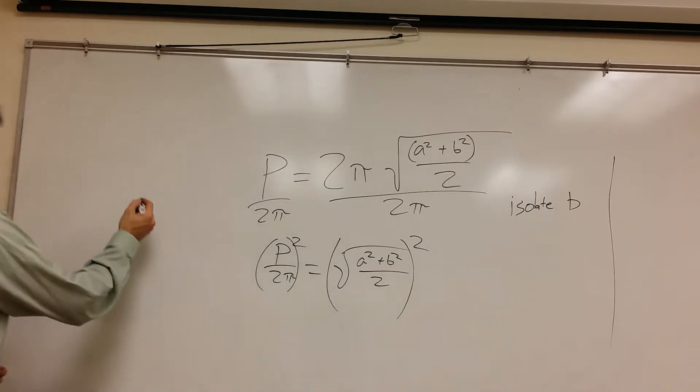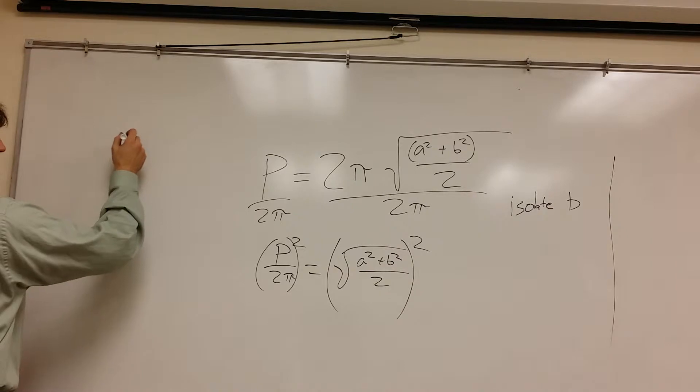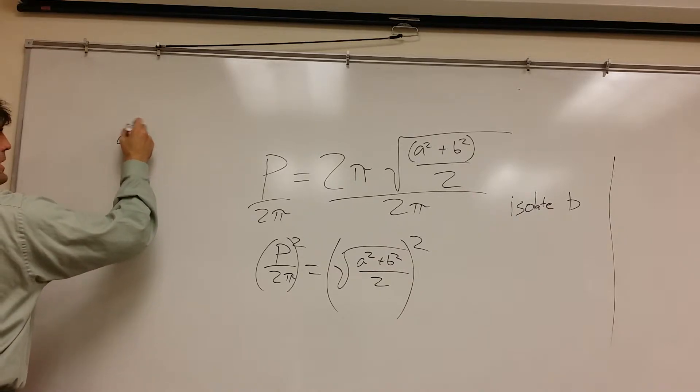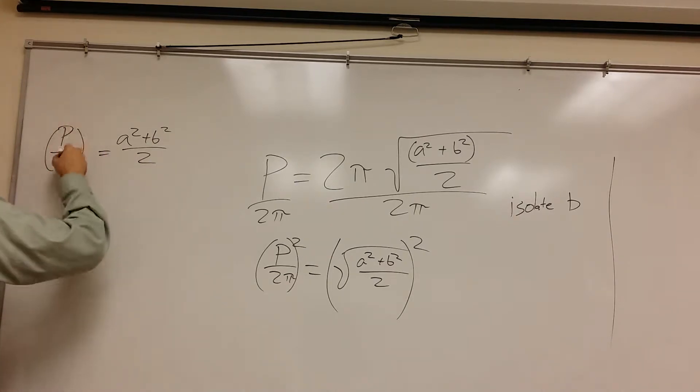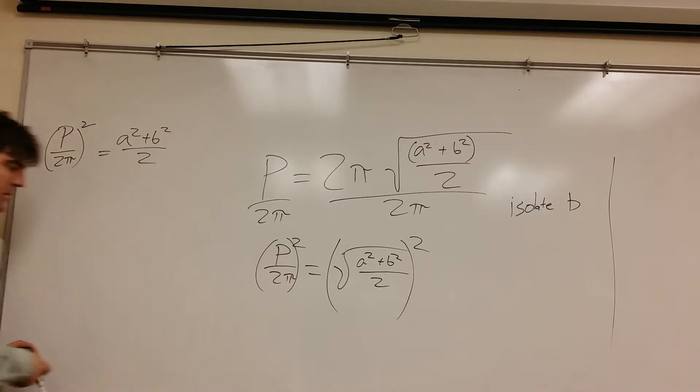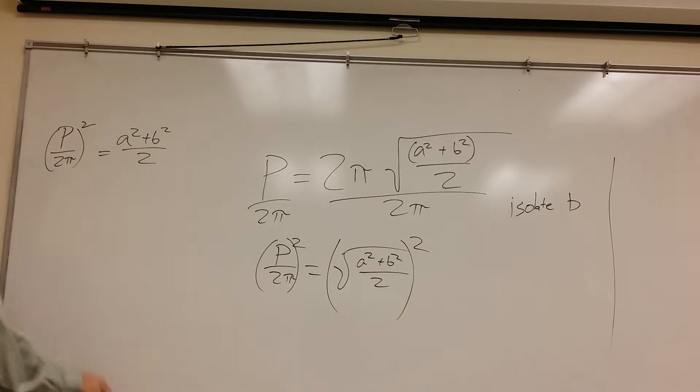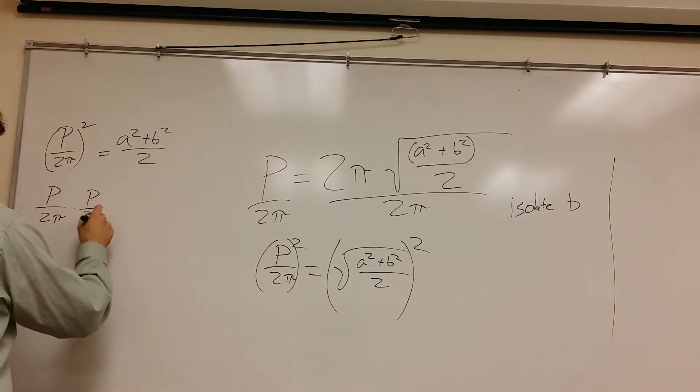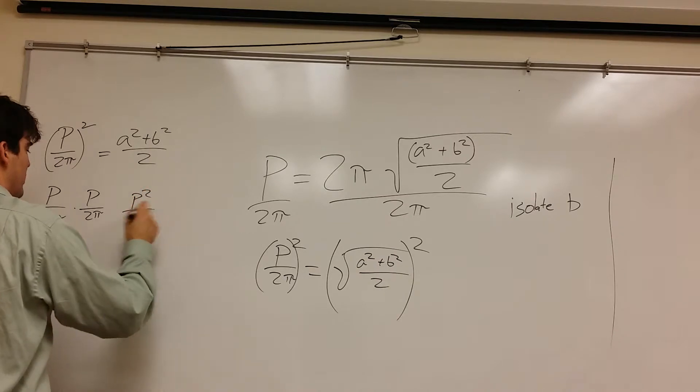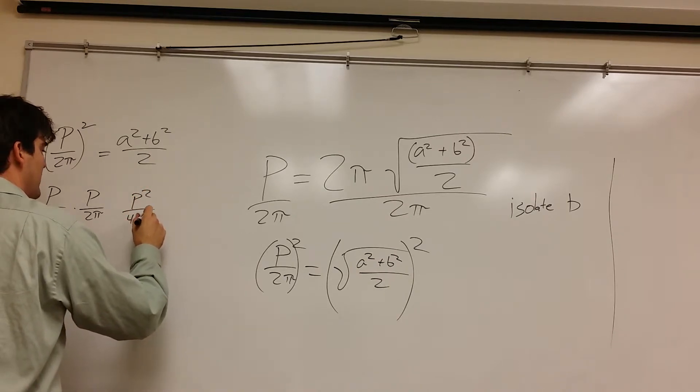So this squared and this square root now cancel out. Let me walk over here. So that means A squared plus B squared over 2 equals P over 2π squared. And you know, I think this might look prettier without those parentheses. So I'm going to apply definition of exponent and get this pretty rough.